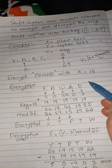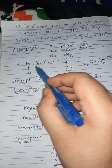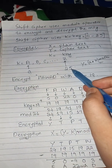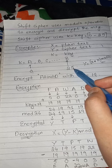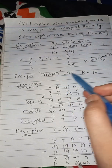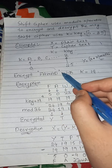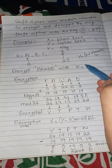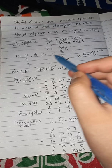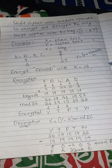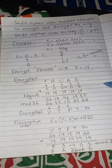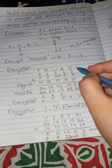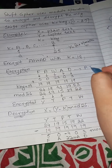Let me give you an example. Here K ranges from A to Z, where A equals 0 and Z is the 25th letter. The question is: I have a plain text 'Fawad' with K equal to 19. This means I have to apply K equal to 19 on 'Fawad' to get the encrypted information. So let's start with the plain text.